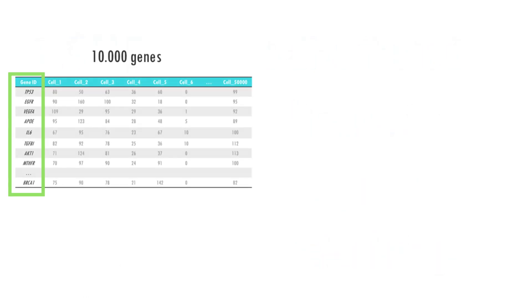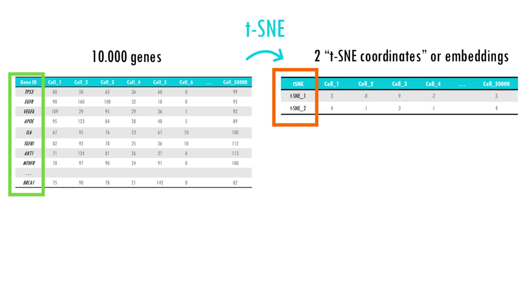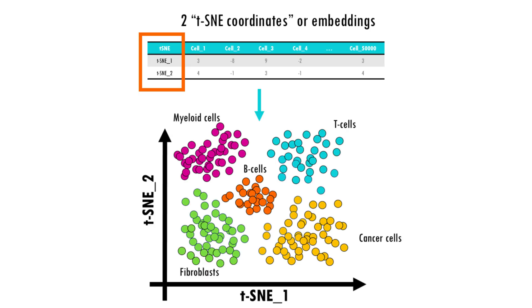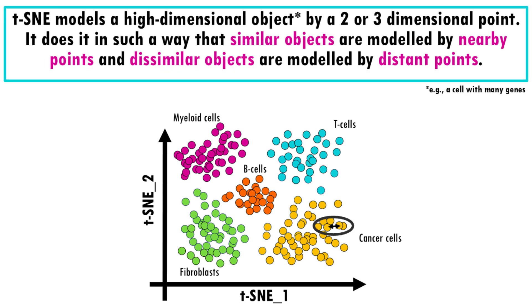In essence, t-SNE transforms each high dimensional object, in this case each cell which has many genes, to a two dimensional point, sometimes three, in such a way that when we plot it, cells with similar gene profiles will be assigned to nearby points, and cells with very different gene profiles will have distant coordinates.